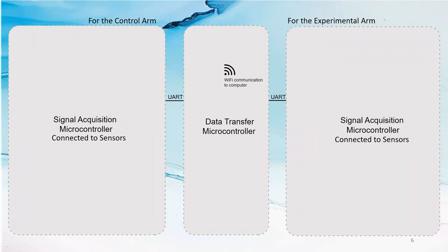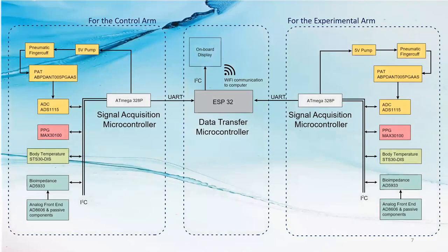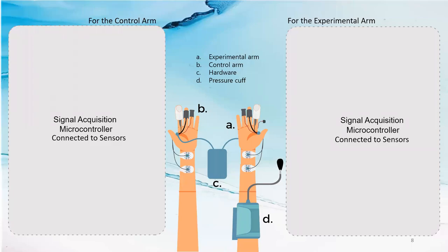The main system can be split into three separate components: one data transmission microcontroller and two signal acquisition subsystems. Each of these signal acquisition subsystems contains a set of sensors — a bioimpedance sensor, a temperature sensor, a blood oxygen level sensor for measuring the PPG, and a pressure sensor. These two systems will be connected to the two arms, using one arm as a control arm and the other as an experimental arm, where blood flow is restricted for a short time to test the endothelial function.